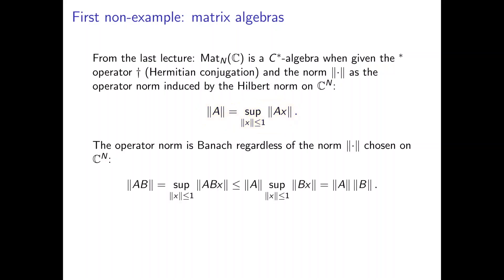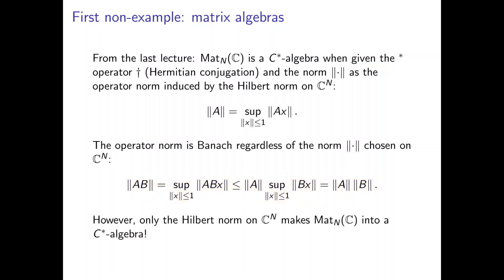This can be shown easily by noting that the norm of a times b is the supremum over x, which is less than or equal to the operator norm of a times the supremum of b·x, and that supremum is just the norm of b. So we get the submultiplicative property for any induced operator norm. However, only the Hilbert norm on ℂⁿ makes the matrix algebra into a C-star algebra.